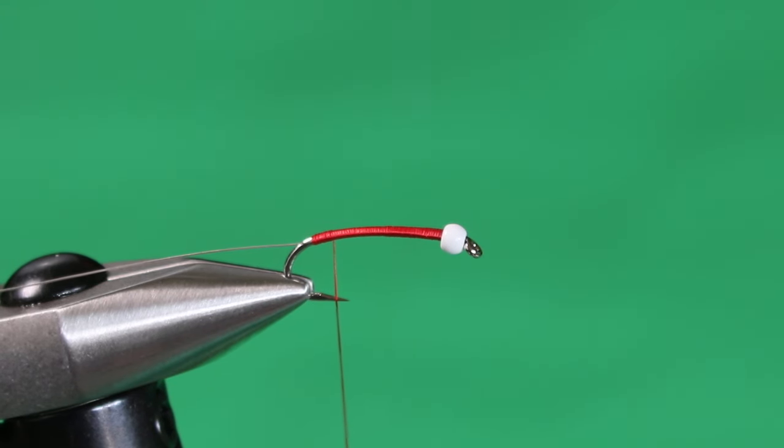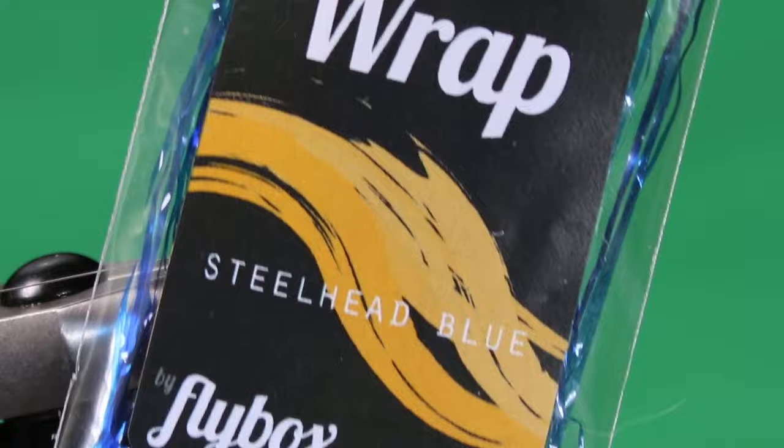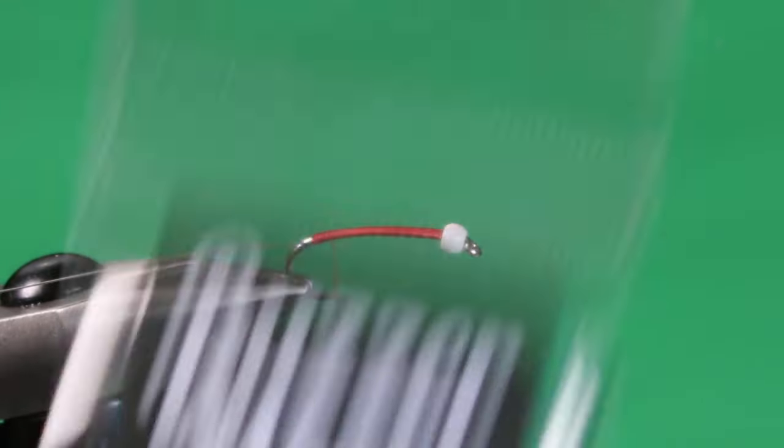I'm going to tie in the body material because we're going to do a subtle blending technique where the red underbody here is going to bleed through or blend with the overbody. The overbody in this case is blue buzzer wrap in steelhead blue. This is where the deep blue comes from in this pattern's name, deep blue sea, deep blue chironomid.